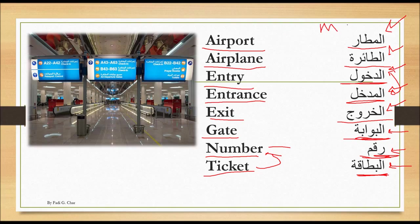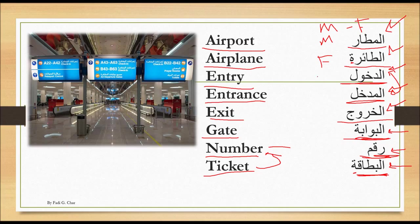Now let's talk about which words are male and which are female. I'm going to write F next to the female words and M next to the male words. Female words usually end with ta marbuta. So, al-matar is a male word — you say 'hatha al-matar' meaning 'this airport'. Al-ta'ira is female — you say 'hathihi al-ta'ira'. Al-dukhol is neutral — it represents an action, so you can't use hatha or hathihi with it.